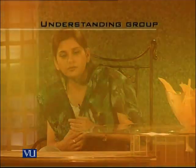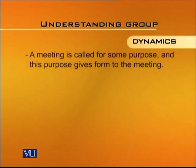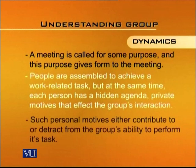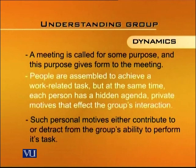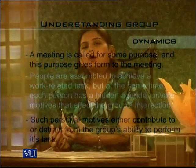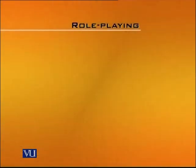We will examine how to understand group dynamics, how to arrange meetings, and how to contribute in a productive meeting. A meeting is called for some purpose, and this purpose gives form to the meeting. People are assembled to achieve a work-related task, but at the same time each person has a hidden agenda or a private motive that affects the group's interaction. Such personal motives either contribute to or take away from the group's ability to perform its task. People play roles in whatever meeting they are participating in, and these roles come under three categories.